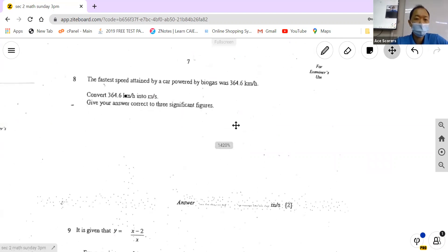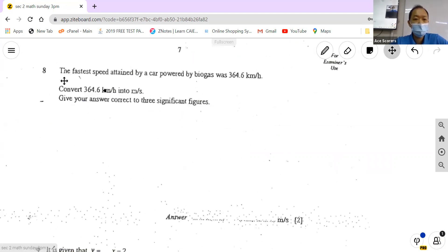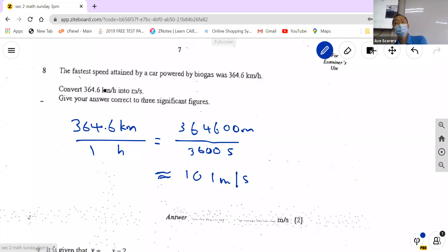Next. The fastest speed attained by a car powered by biogas was 364.6 km/h. Convert this into meters per second. For conversion questions, what we do is we do separately. We are given 364.6 kilometers per one hour. We need to convert to meters per second. So what we do is we do the top and the bottom separately. So 364.6 km is, we know that one km is how many meters?